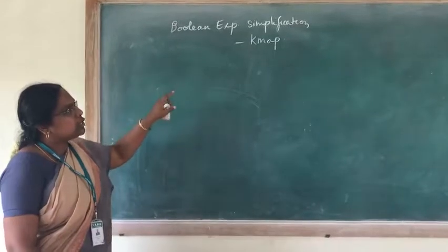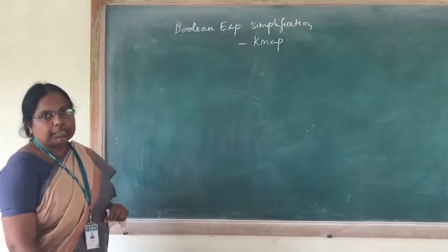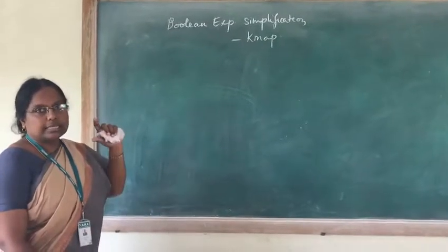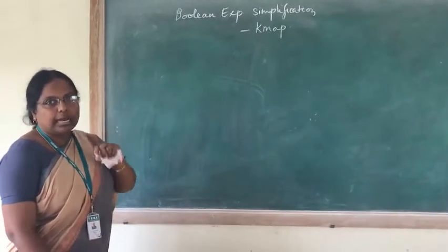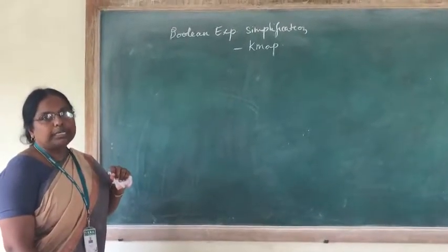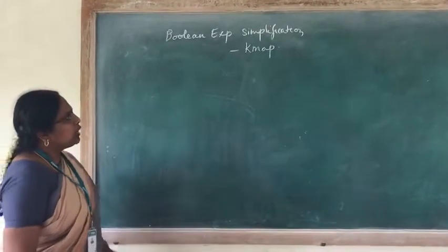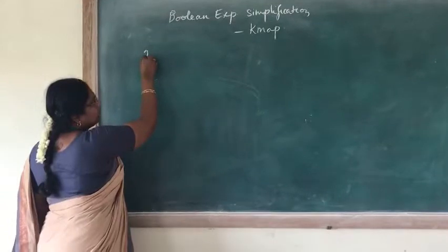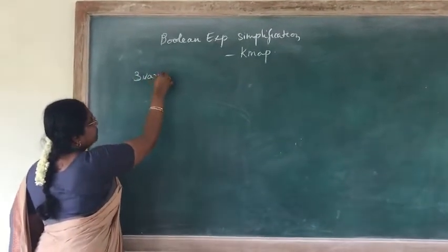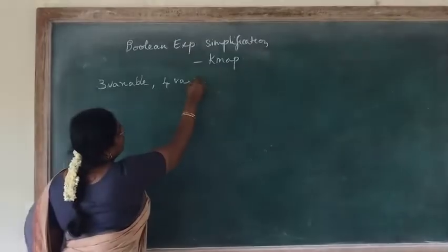The other method is the Karnaugh map or K-map, which is a graphical method and is very simple to apply. We can draw circles or squares and group the min terms to get the product terms. We will see K-map for two, three, and four variable cases.